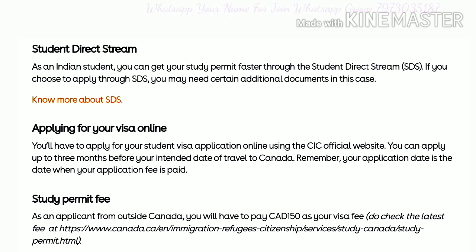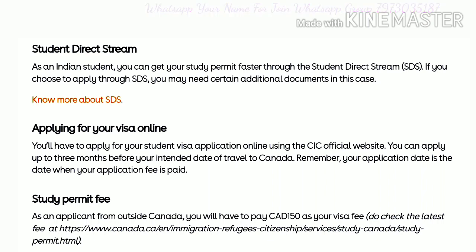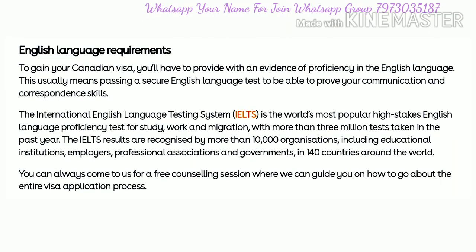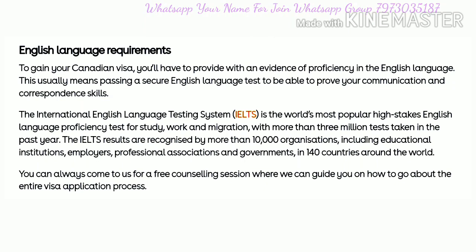You can apply for your visa online, which is a very easy process nowadays. The fee for the study permit is 150 Canadian dollars. You can check this on the Canada immigration, refugees, and citizenship services website. If your first language is not English, you must take IELTS and score an overall six bands with not less than six in all modules to apply in the SDS category, which gives more than 90 percent chances of visa approval.